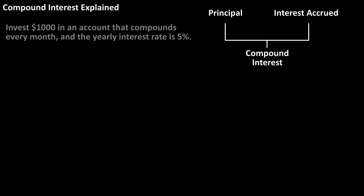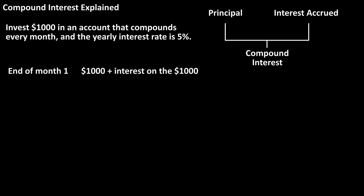Compound interest is interest on the principal amount plus any interest that is already accrued. As an example, let's say that you invest $1,000 in an account that compounds every month, and the yearly interest rate is 5%. Since the interest compounds every month, at the end of one month, you'll have the initial $1,000 you invested plus the interest made on that amount.